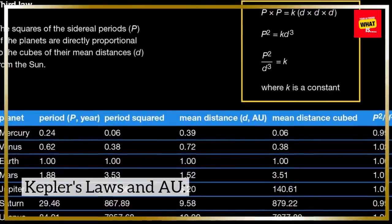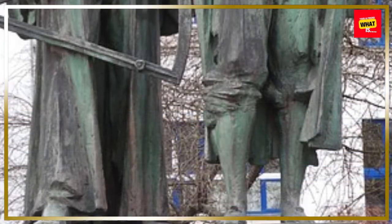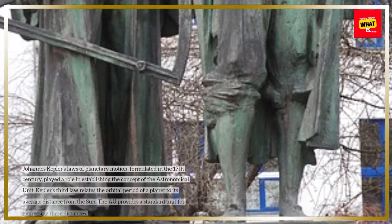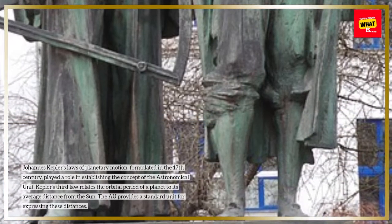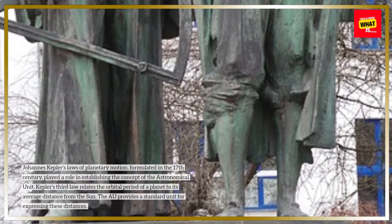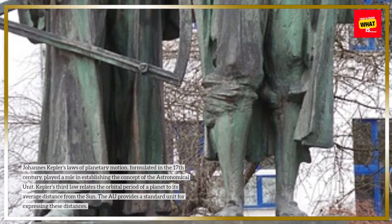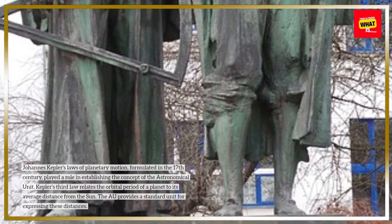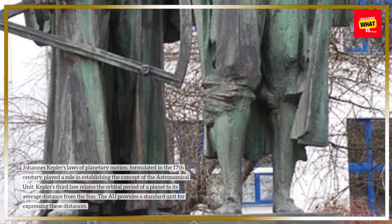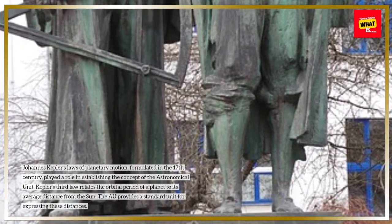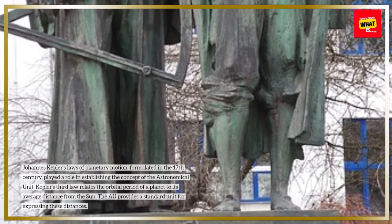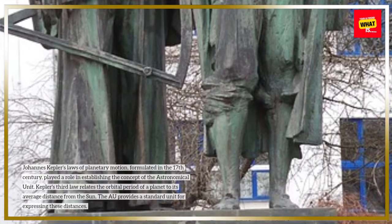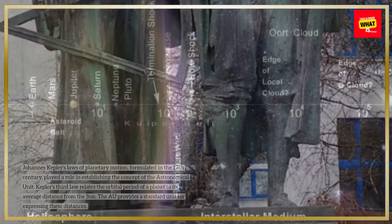Kepler's Laws and AU: Johannes Kepler's Laws of Planetary Motion, formulated in the 17th century, played a role in establishing the astronomical unit. Kepler's 3rd law relates the orbital period of a planet to its average distance from the Sun. The AU provides a standard unit for expressing these distances.